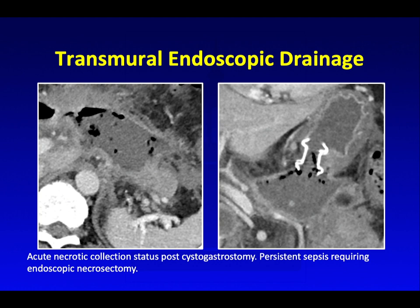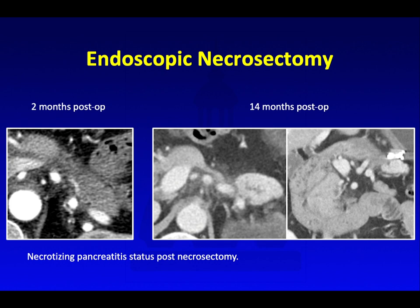This patient had persistent symptoms despite transmural endoscopic drainage and had to go on to necrosectomy. Two months post-op, you see ill-defined tissue at the necrosectomy site. At 14 months post-op, this area is basically totally scarred down and we don't really see much of any remaining pancreas at that site.